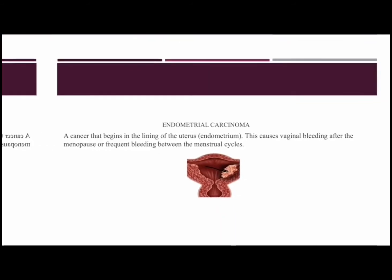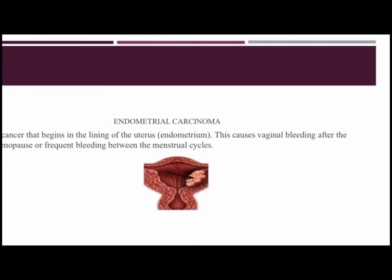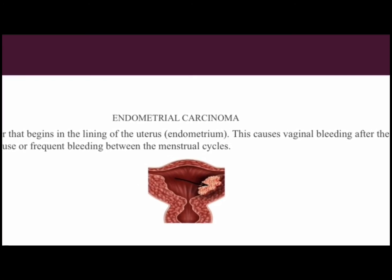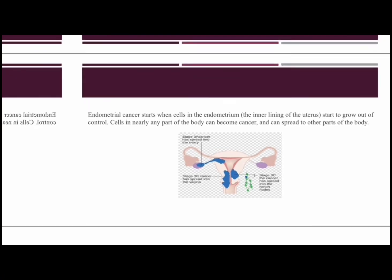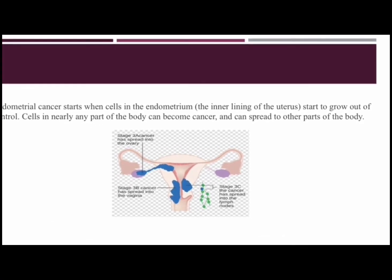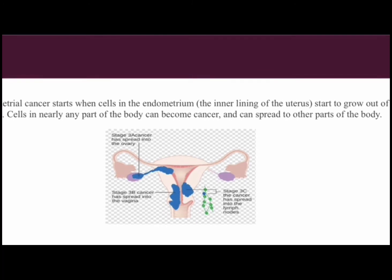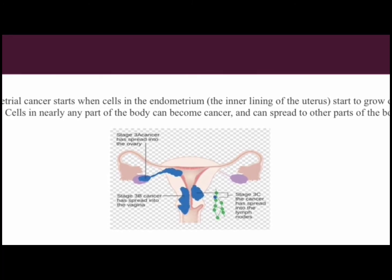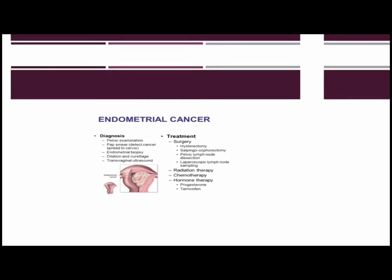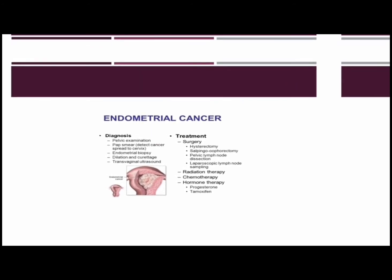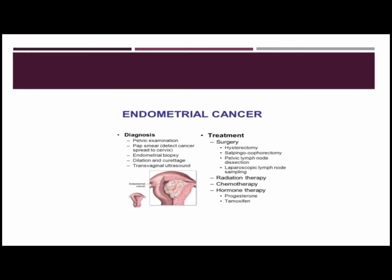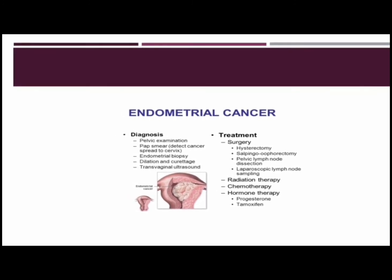Endometrial carcinoma is a cancer that begins in the lining of the uterus, causing vaginal bleeding after menopause or frequent bleeding between menstrual cycles. Endometrial cancer starts when the cells in the endometrium begin to grow out of control, and cells in nearly any part of the body can become cancer and spread to other parts. It can be diagnosed through pelvic examination, Pap smear, endometrial biopsy, dilation and curettage, and transvaginal ultrasound.